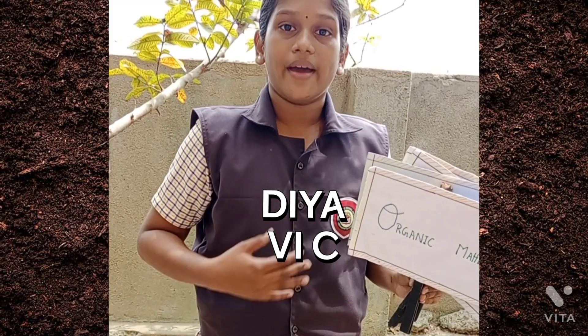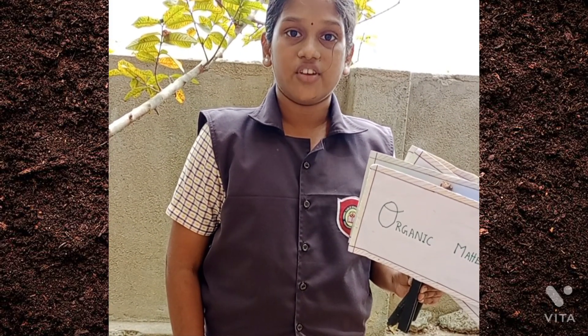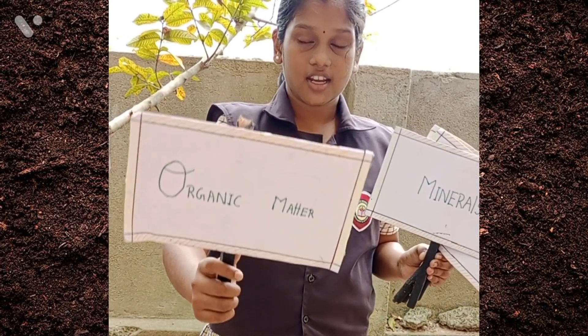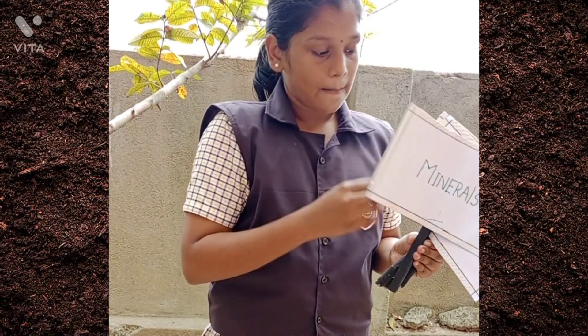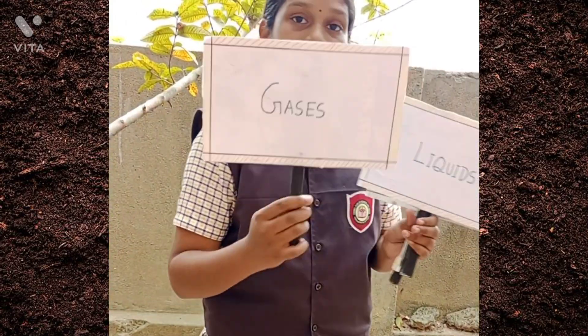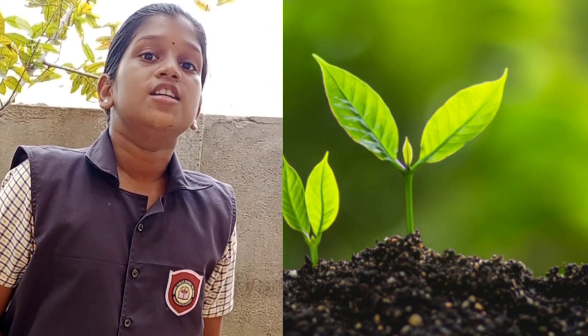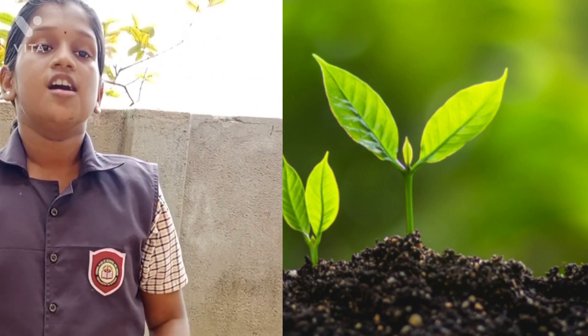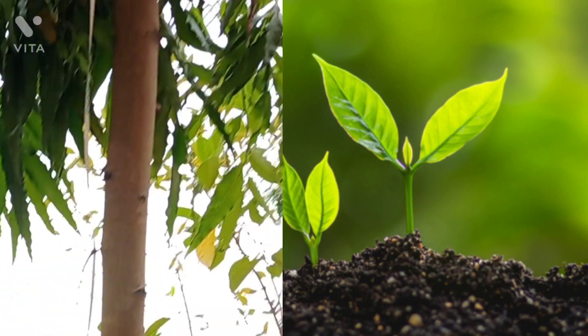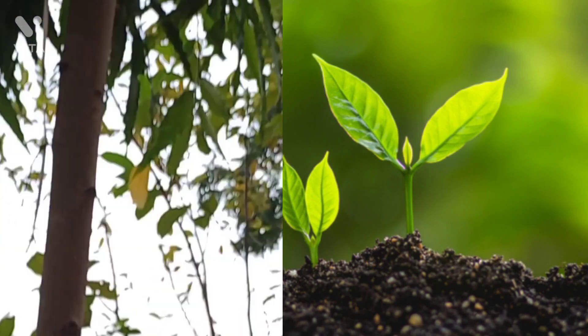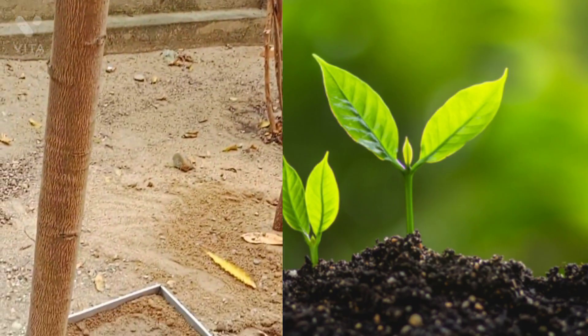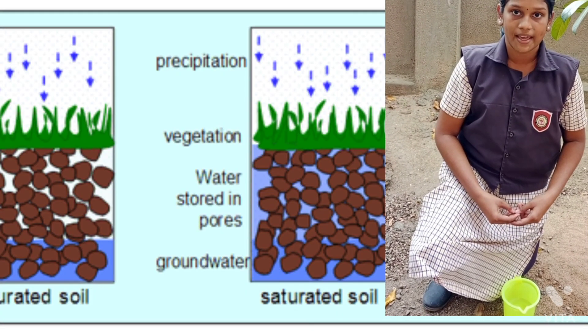Good morning. Myself India, I am studying in sixth standard C section. Definition of soil: Soil is a mixture of organic matter, minerals, gases, liquids and organisms that together support life. Earth's body of soil is called the pedosphere. Soil has four important functions: as a medium for plant growth, as a means of water storage, supply and purification, as a modifier of the atmosphere, and as a habitat for organisms.